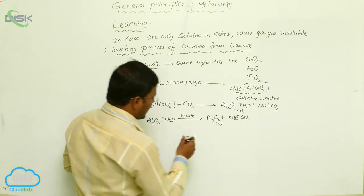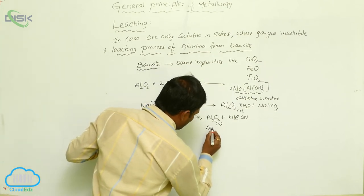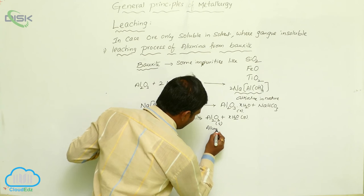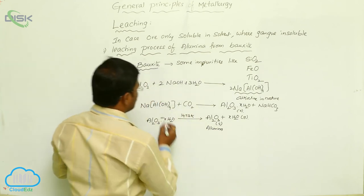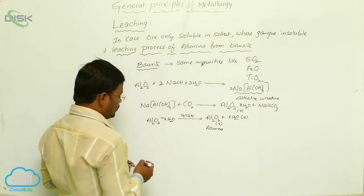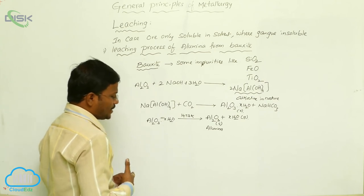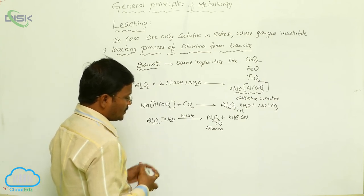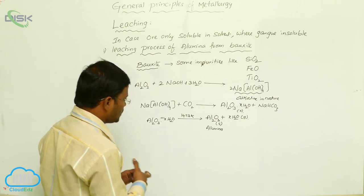The formed alumina Al2O3·xH2O, when heated to nearly 1473 Kelvin, yields pure Al2O3, while xH2O is eliminated as gas and the leftover solid is pure alumina. The bauxite is thus converted into pure alumina with the elimination of gangue.